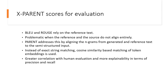Next, we describe the x-parent metric that we propose. BLEU and ROUGE are metrics that rely only on the reference text, which is problematic when the reference and the source do not align entirely. X-parent addresses this problem by aligning the n-grams from the generated and reference text to the semi-structured input. However, parent is defined for a monolingual setting in which all three texts — the source, the reference, and the generated text — are in the same language. For our metric, we use cosine-based similarity instead of exact string matching. This metric shows a greater correlation with human evaluation and offers more explainability in terms of precision and recall.